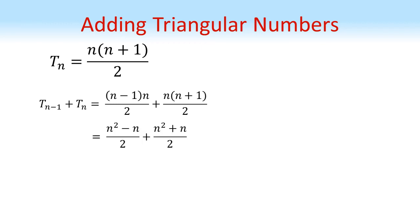Expanding the tops gives us n squared minus n over 2 plus n squared plus n over 2. Bringing our fractions together and collecting like terms gives us 2n squared over 2 which can be simplified to n squared.